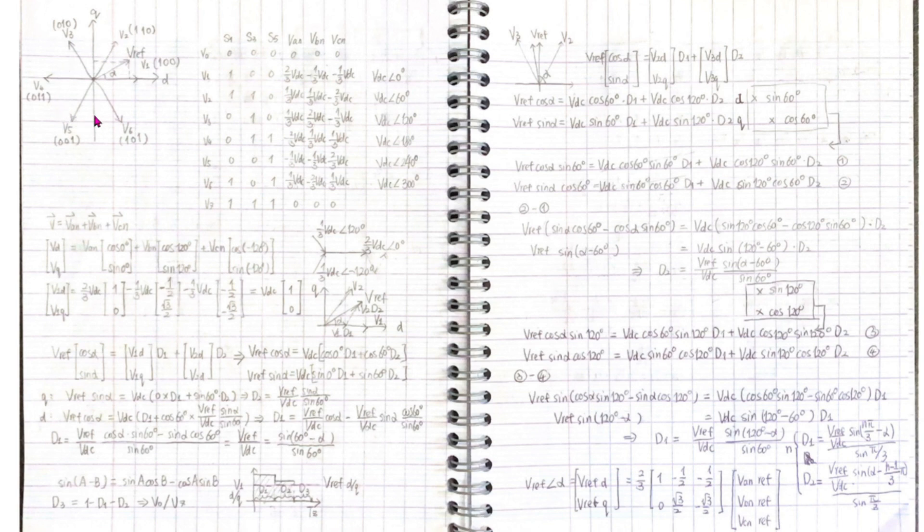In the first sector, the active vectors V1 and V2 are used. To combine two adjacent vectors into a specific vector in between, we just need a coefficient before each vector, D1 and D2.